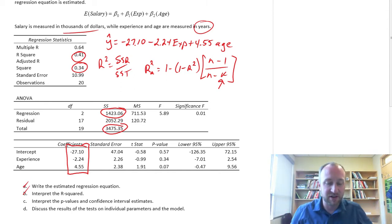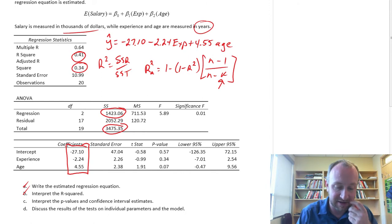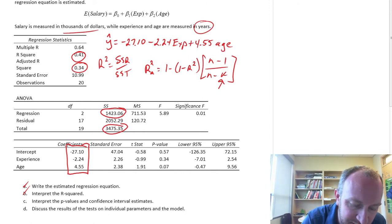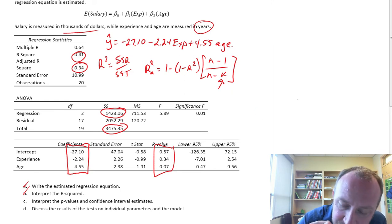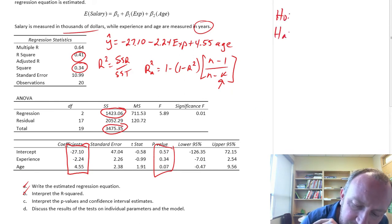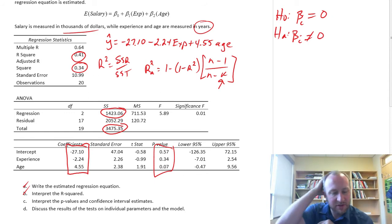Interpret the p-values and confidence interval estimates. Okay, now we might start to see some interesting things. When we look at our p-values, on individual, let's look at the individual parameter estimates. So these all correspond with a null and alternative hypothesis, that the individual parameter is equal to 0, or not equal to 0.